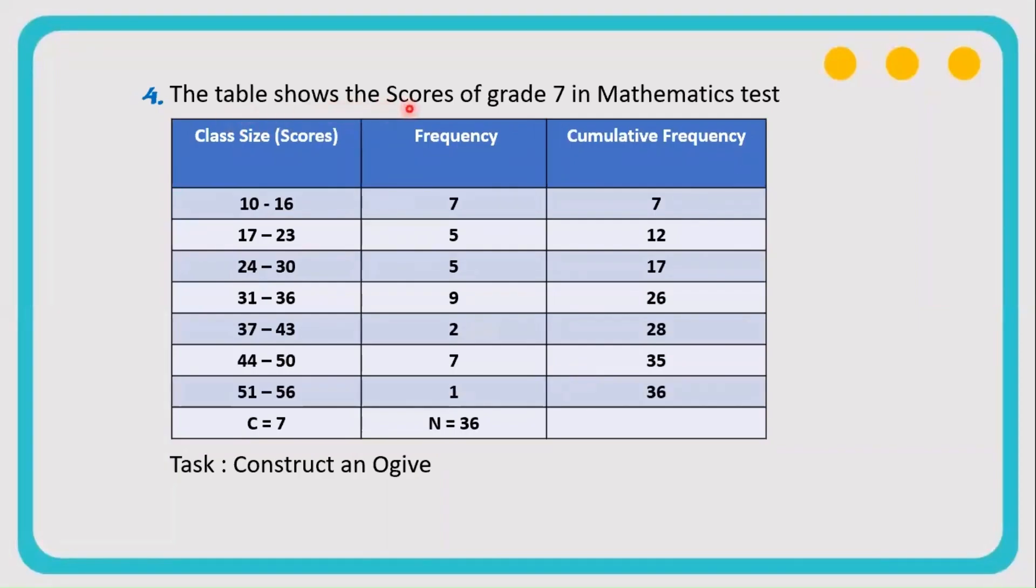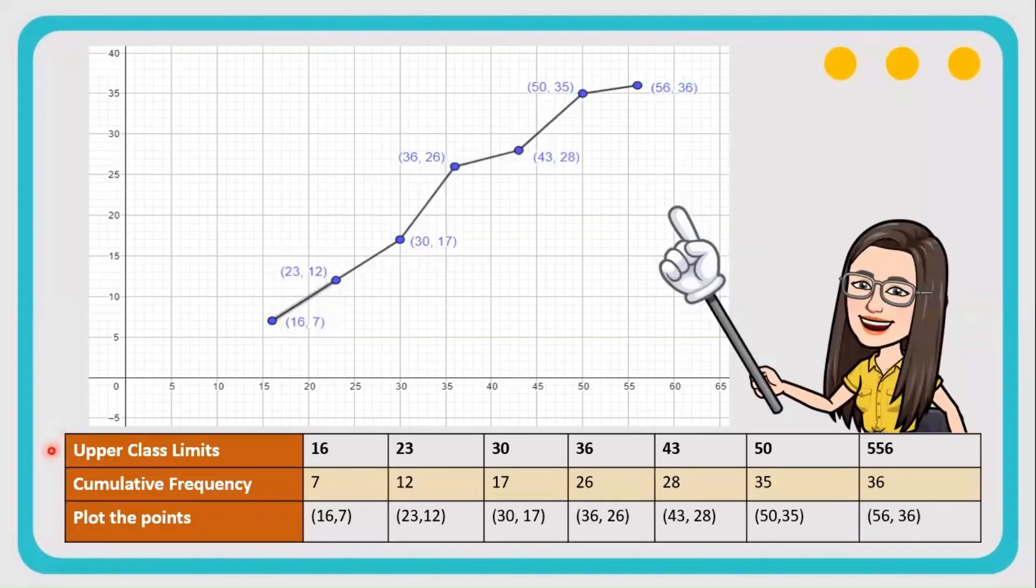Number 4. The table shows the scores of grade 7 in mathematics test, so we need to construct an ogive. Remember that to construct an ogive, we need to have a cumulative frequency and the upper limits. We have here below the upper class limits and the cumulative frequencies. And we write their points so we can easily plot it. This is how our ogive looks like. We plot the points here.